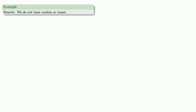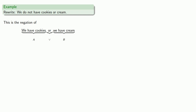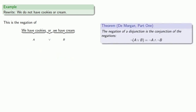For example, the statement 'we do not have cookies or cream' can be rewritten. This is the negation of the statement 'we have cookies or we have cream,' which is the disjunction a or b. De Morgan's Law says that when we negate a disjunction, we get a conjunction of the negations. So this becomes not a and not b: we do not have cookies and we do not have cream.